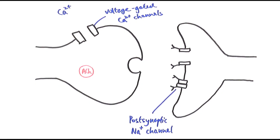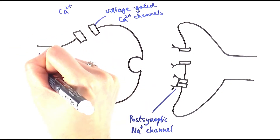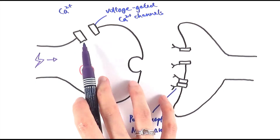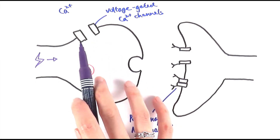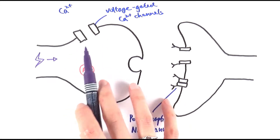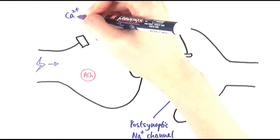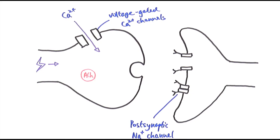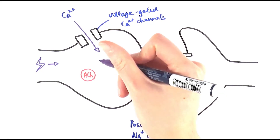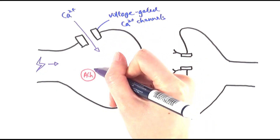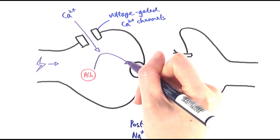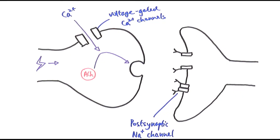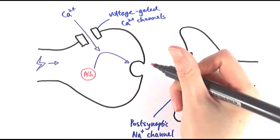When an action potential arrives at the pre-synaptic neuron, these calcium ion channels are voltage-gated, so the depolarization of the membrane causes the calcium ion channels to open. The calcium ions then rush into the pre-synaptic neuron down the electrochemical gradient. When calcium enters, it moves the acetylcholine vesicles to the cell surface membrane, where they fuse with it, releasing acetylcholine into the synaptic cleft.